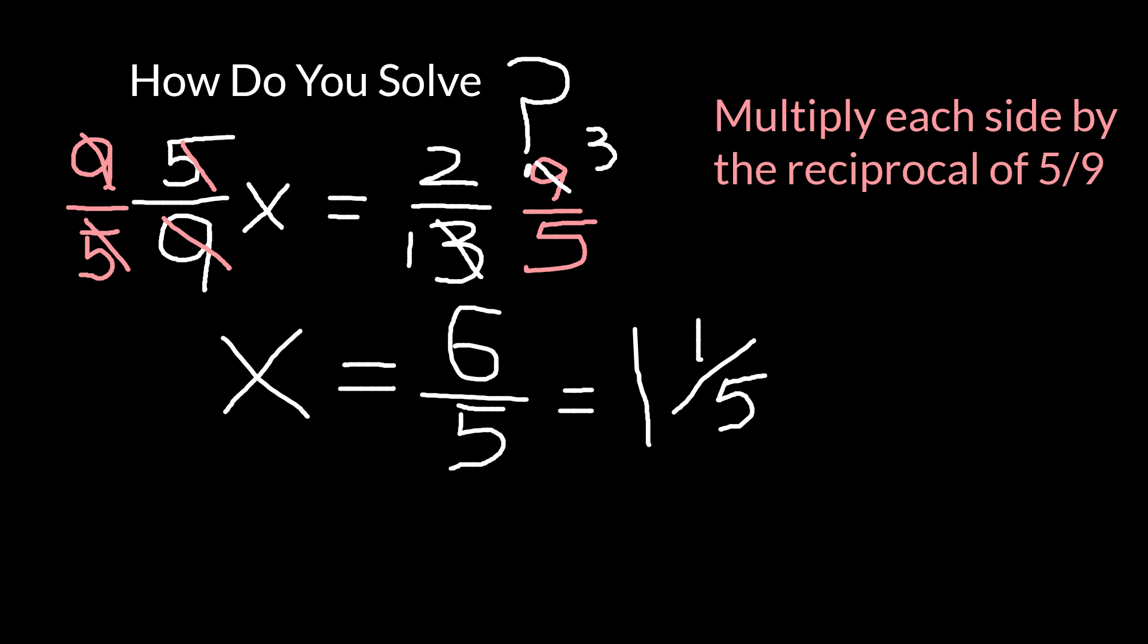So my estimate was that it was something like four thirds or one and one third. One and one fifth is in that same ballpark. So I can have some level of confidence in my answer that x is going to be equal to six fifths or one and one fifth.